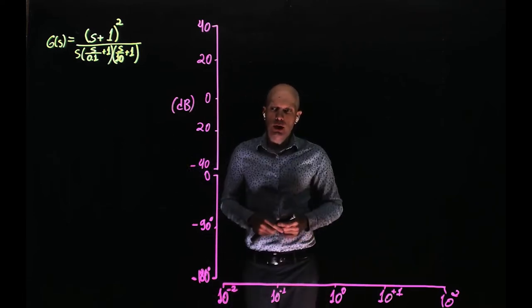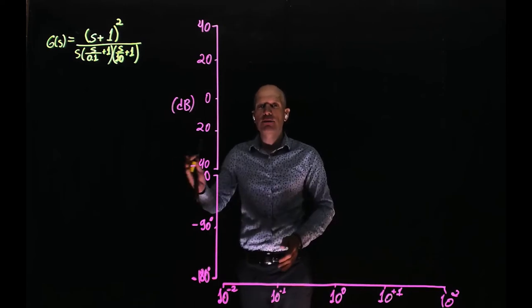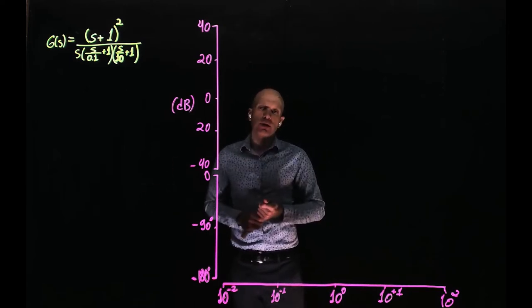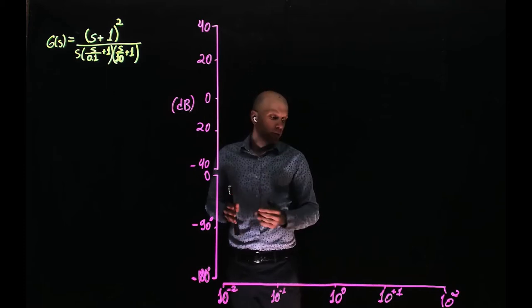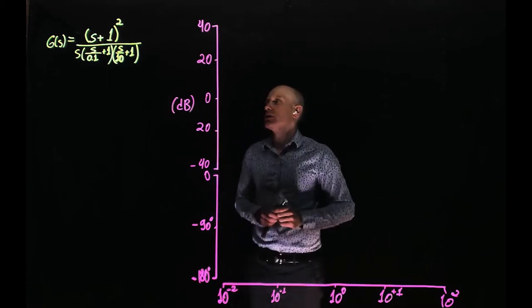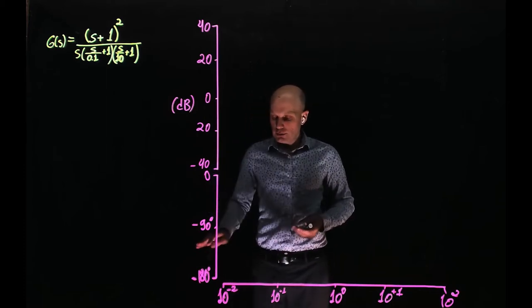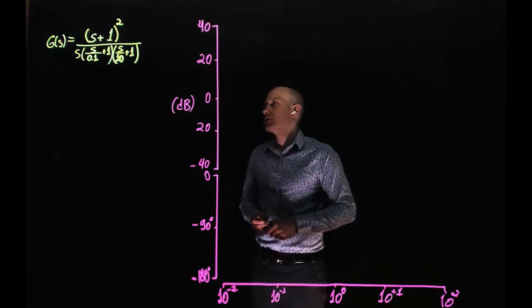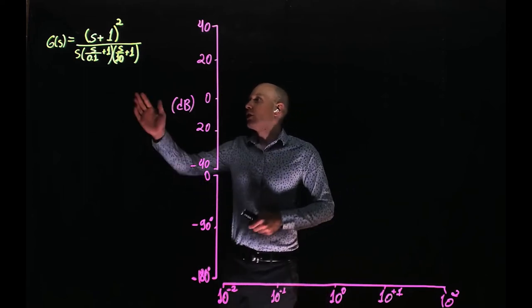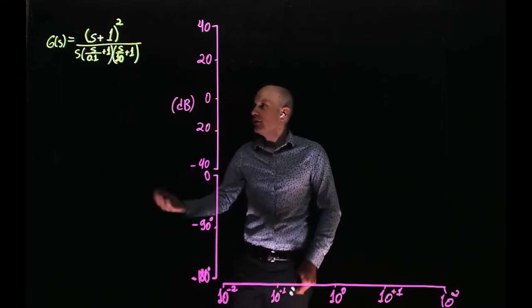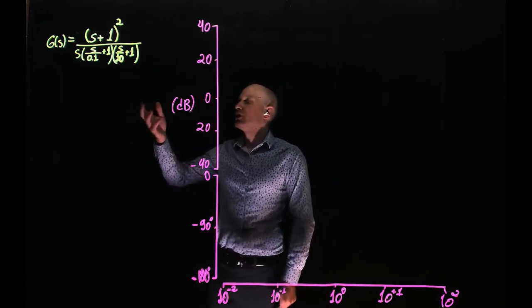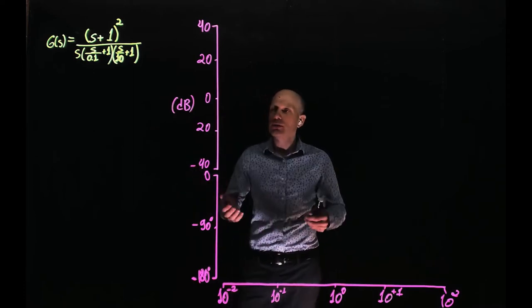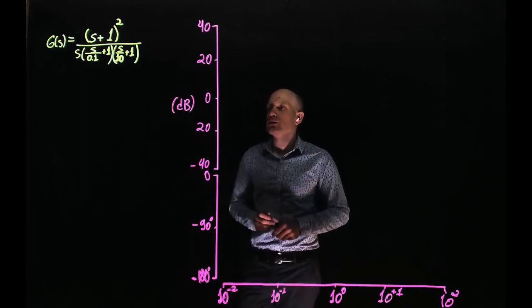To start drawing this Bode plot, we can look at very low frequencies — to the left of all cutoff frequencies — find the magnitude of the Bode plot there, and then move towards higher frequencies. At very low frequencies, all zeros and poles are to the left, so they haven't started acting on the Bode plot yet. Their magnitude will be zero, so they are not contributing to the magnitude of the Bode plot there.